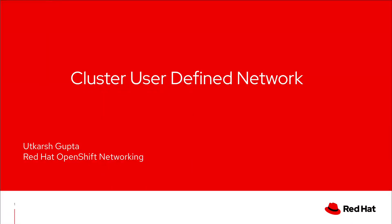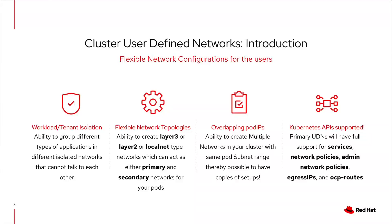Now let's take a look at what CODN is. Cluster User Defined Network, or as we call it CODN, is used to run multiple applications across different namespaces under an isolated network. This CODN is completely isolated from the cluster network in OpenShift. It has the ability to create layer 2 or layer 3 type network which can act as either primary or secondary network for the application pods.